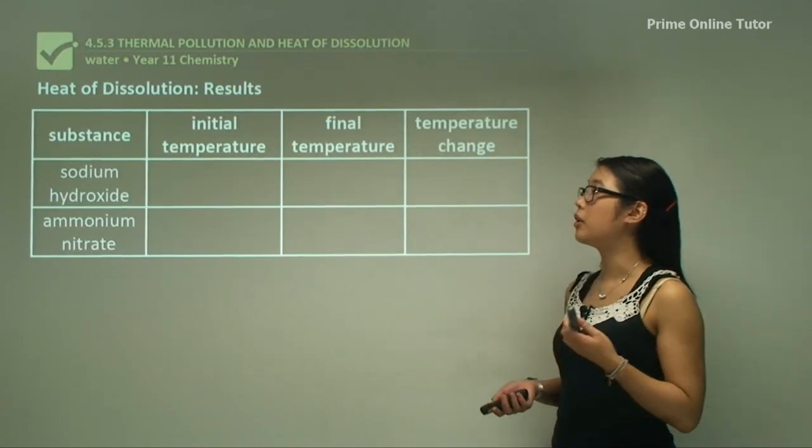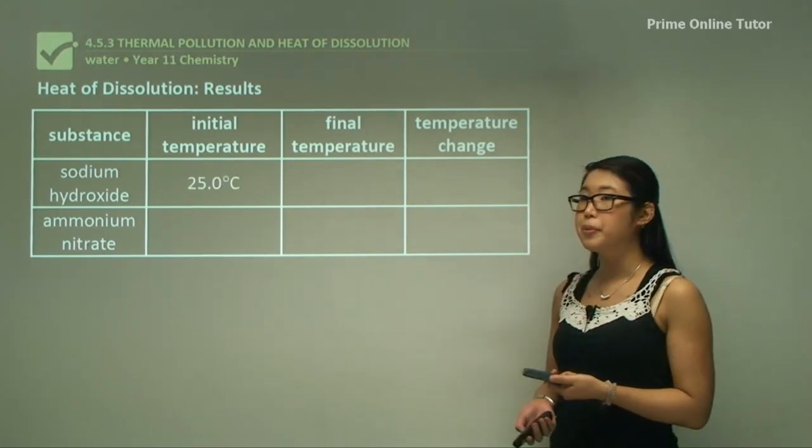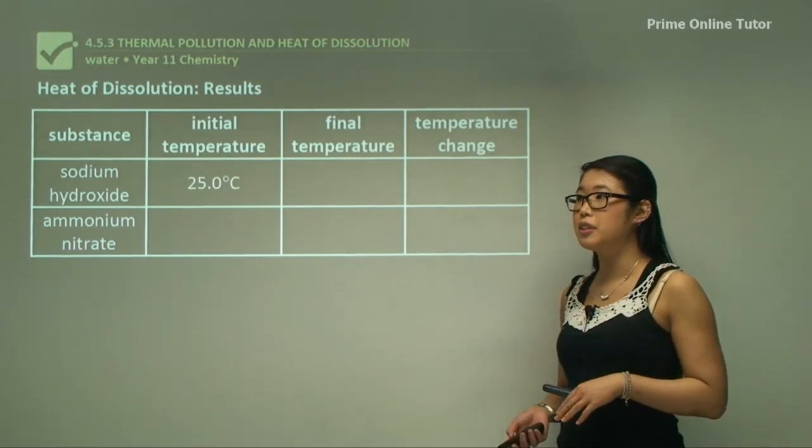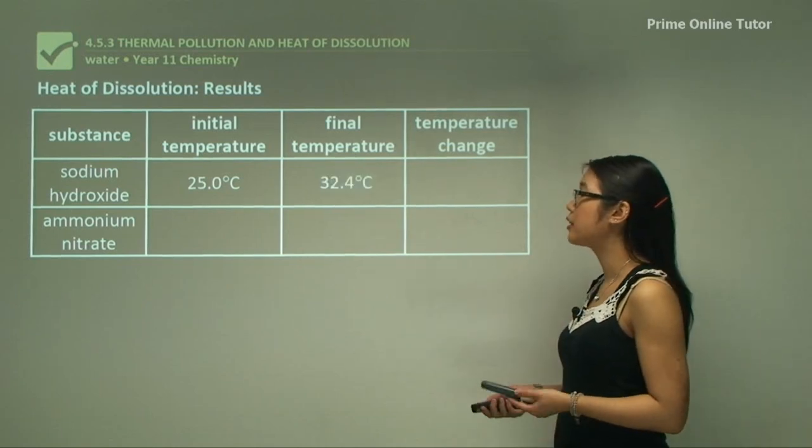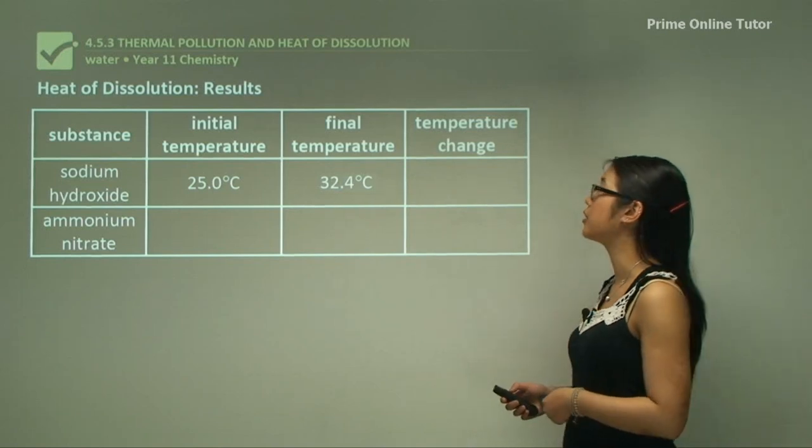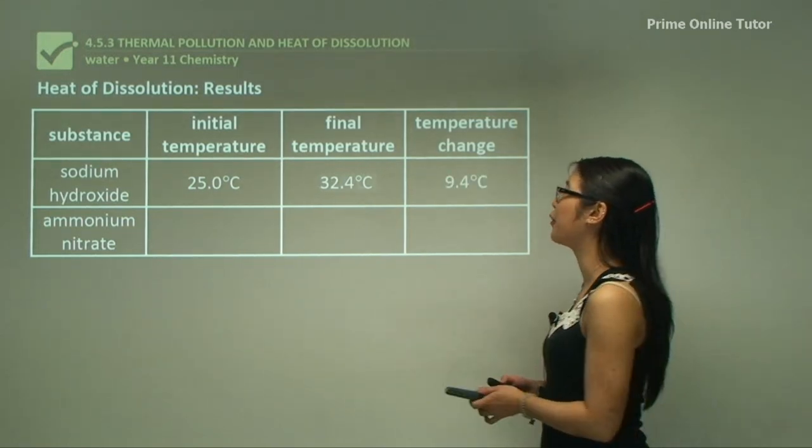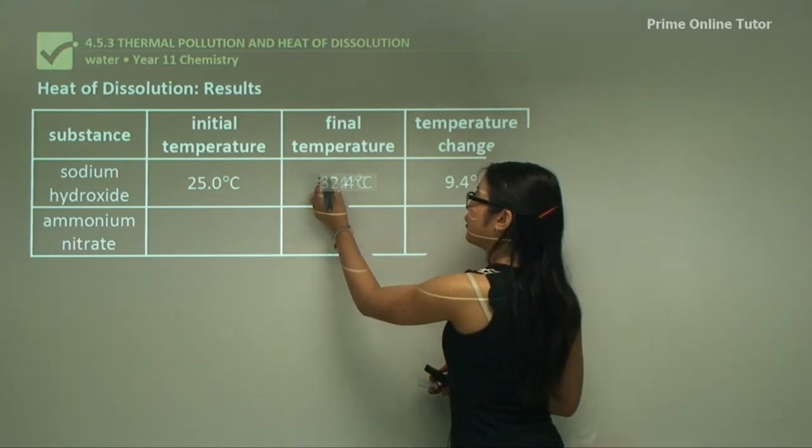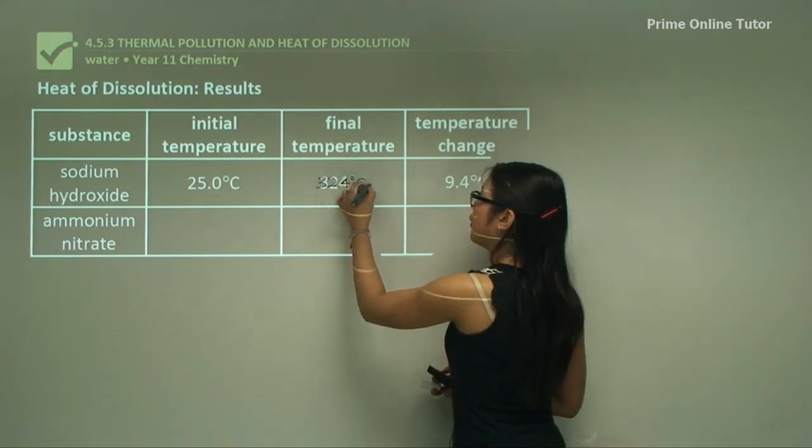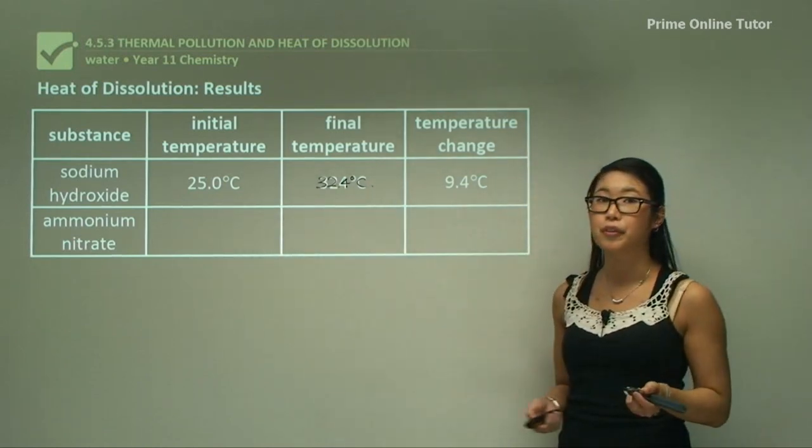So typical results will look something like this. Our initial temperature should be around 25 degrees Celsius depending on the temperature of the room. And the final temperature is going to be 34.4 degrees Celsius, so the change in temperature is 9.4 degrees Celsius.